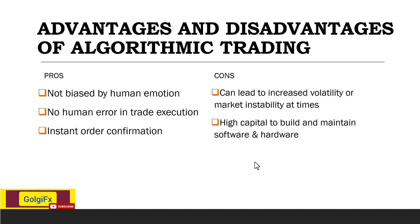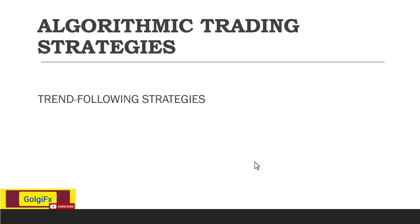There are a lot of trading strategies that people use with algo trading bots, but one of the most powerful is the trend following strategy. The most common algorithmic trading strategies use the moving average, channel breakouts, price level momentum, and other related technical indicators. All these tools used to create algo trading bots are rooted in trend following strategies.